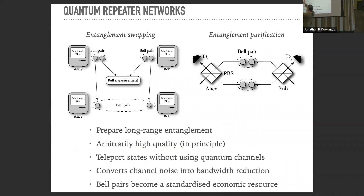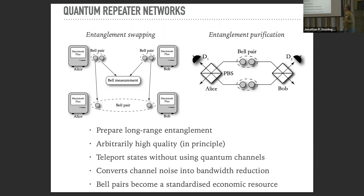The idea of entanglement swapping is: you start with two bell pairs and do a joint bell measurement on one half of each bell pair, and what you're left with is a bell pair between the ends. So if you have a whole bunch of links that communicate bell pairs, you do this intermittently between them and extend the range. The other thing we need to address is the quality of the bell pairs, which we can improve using purification.